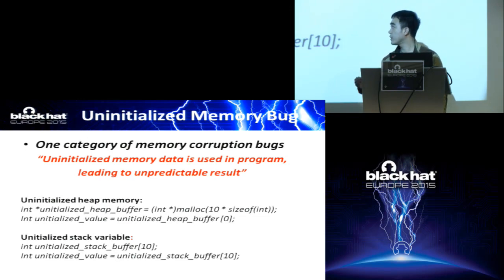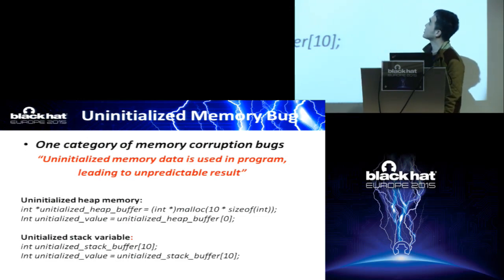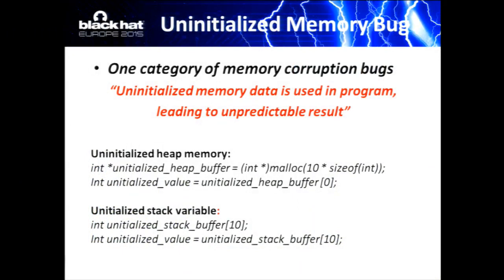What is an uninitialized memory bug? It is one category of memory corruption bugs. When you write a program, you will access memory. If your program uses local variables, global variables, or dynamically allocated buffers, your program will access memory data. If your program uses this memory data before it initializes it, you may get unpredictable results. We call this an uninitialized memory bug.